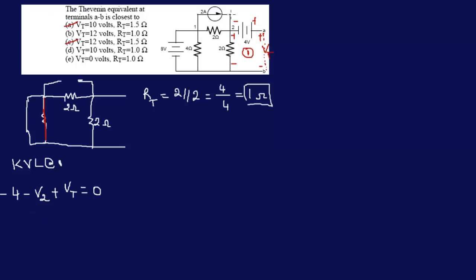We don't know what V2 is, so we need to find that. We can apply KCL at this node. Let's assign currents — assume current is going out here, with current coming in from two directions. It doesn't really matter which direction we choose; we'll end up with the same results anyway.